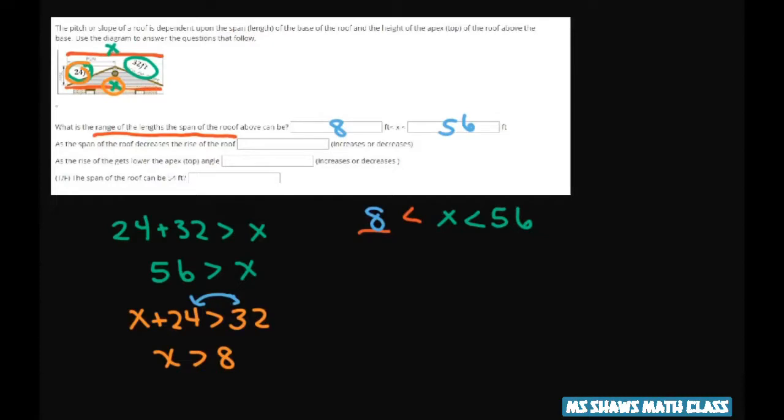Now let's look at what the other part says. As the span of the roof decreases, let's just look at the span right here. So if the span decreases and it goes lower from here, then what's going to happen is the rise of the roof is going to get larger. So this rise up here is going to be closer to that. So that's going to be an increase.